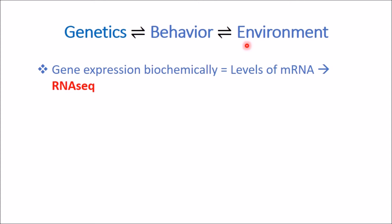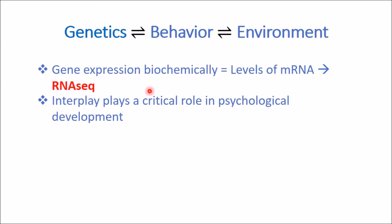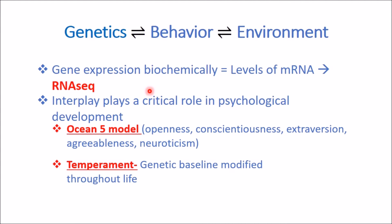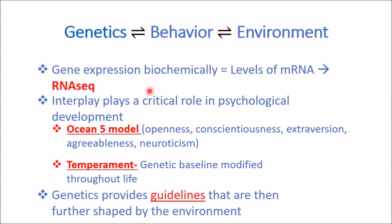There's a dynamic interaction that plays a critical role in psychological development, including behavioral traits. Remember the OCEAN Five model for traits: openness, conscientiousness, extraversion, agreeableness, and neuroticism. These aren't the only traits, just a model. The dynamic interaction starts the moment you are born with the development of temperament, which is the innate predisposition to certain personality traits. The environment quickly modifies the behavior of an infant — rather than being fully predetermined, genetic inheritance provides guidelines that are often further shaped by the environment.